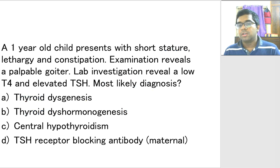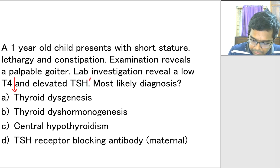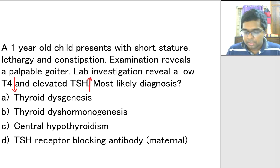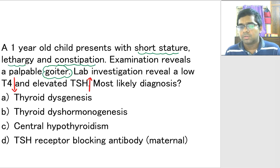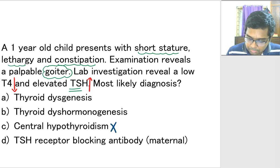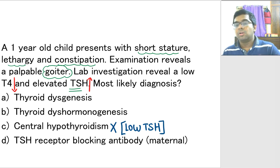A one-year-old child presents with short stature, lethargy, and constipation. Examination reveals a palpable goiter. Lab investigation reveals low T4 and elevated TSH. Whenever you have a child with short stature, lethargy, and constipation along with goiter, you are looking at a thyroid problem. Whenever elevated TSH is given, the option automatically ruled out is central hypothyroidism, because in central hypothyroidism there will be low levels of TSH. The remaining options are thyroid dysgenesis, thyroid dysharmonogenesis, and TSH receptor blocking antibody from the mother.